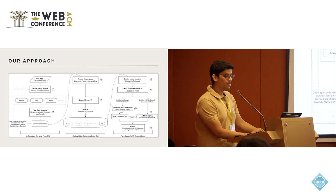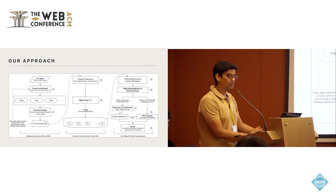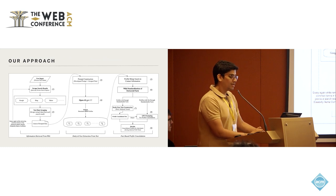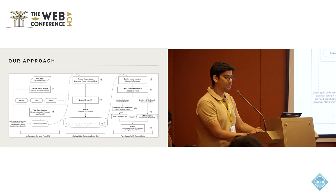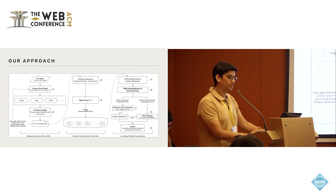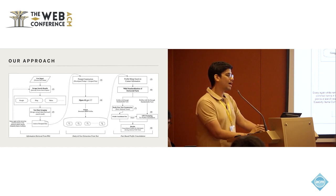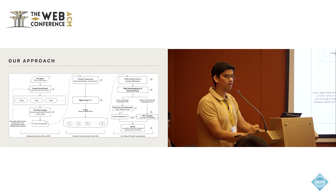Our approach is grounded on principles that include extracting valuable factual information using LLMs, prompt engineering, and standardization of extracted facts. The pipeline can be broadly divided into three verticals: information retrieval from the web, entity extraction from text, and fact-based profile consolidation. The first part involves sending queries to various search engines such as Google, Bing, and Yahoo to extract search results for a given name. To ensure the name is a complete match, we enclose it in double quotes.